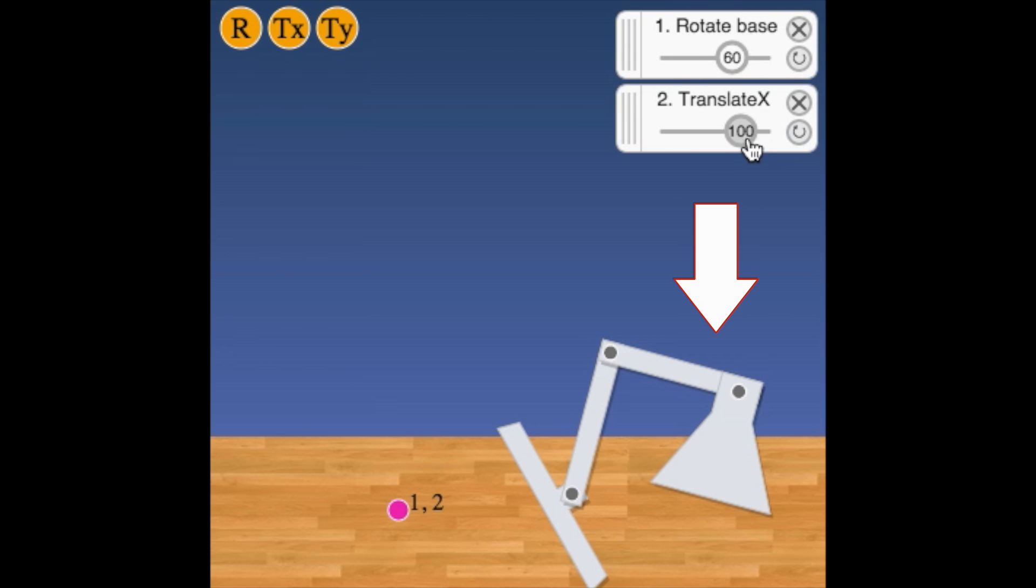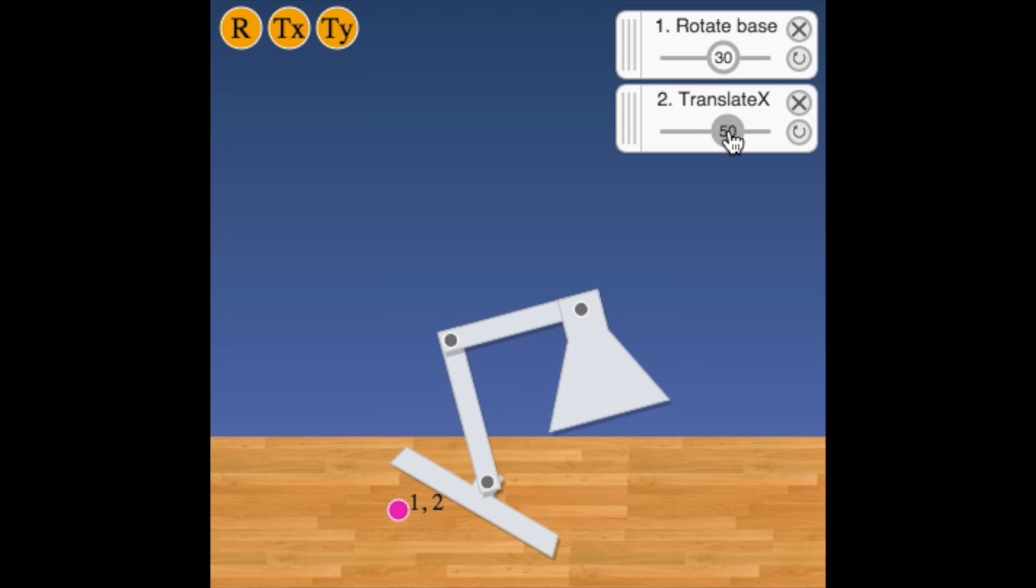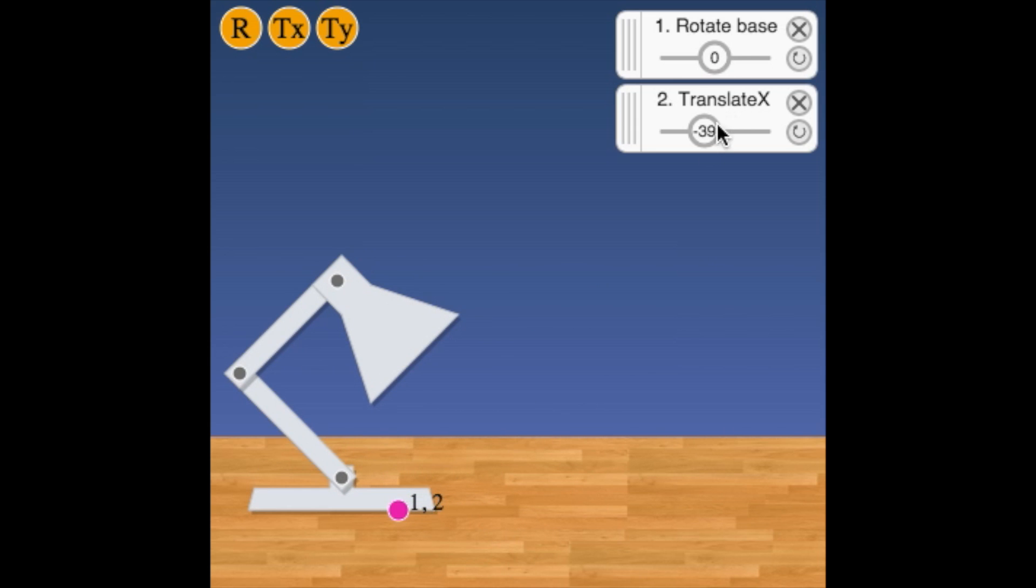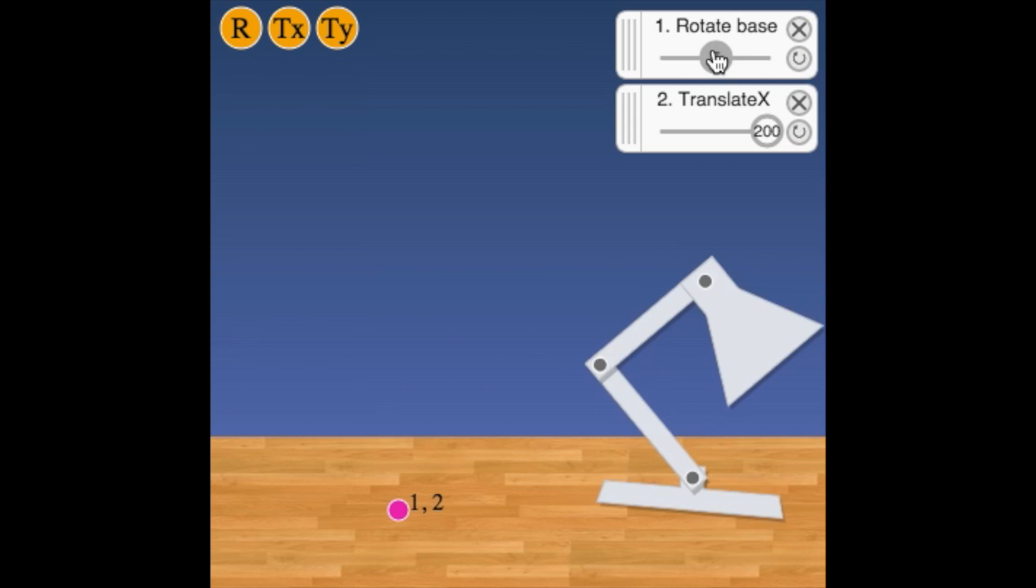The animators who use this are moving to a position and then posing with rotates, moving to another position and posing with rotates again and so on. So they should be able to rotate about the base no matter where they translate it.